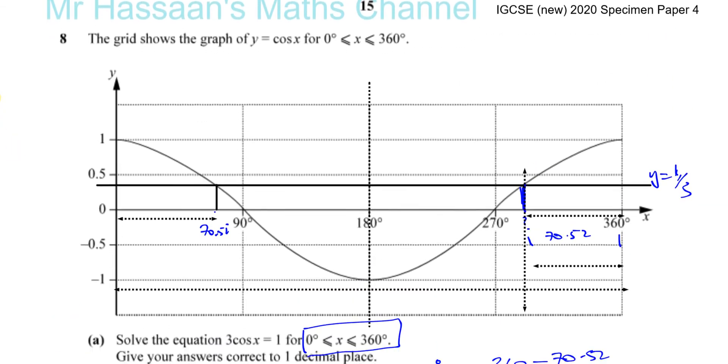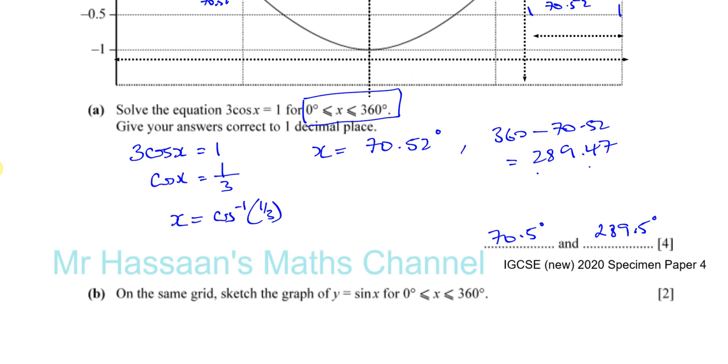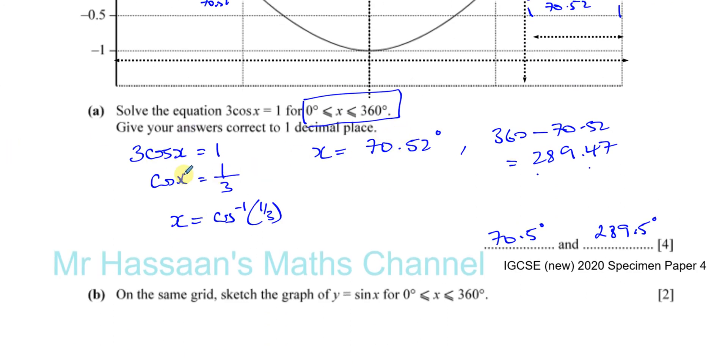If they didn't have the graph there for you, you should still understand this concept that for the cosine curve, 180 degrees is like the line of symmetry. So basically if you know one angle, then the other angle will always be 360 minus the angle that you have. For cosine, when you're solving a trigonometry equation, your calculator will give you one solution, and if the range is big enough to include up to 360, you're going to have 360 minus that solution for the other angle.